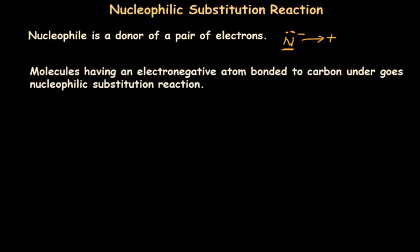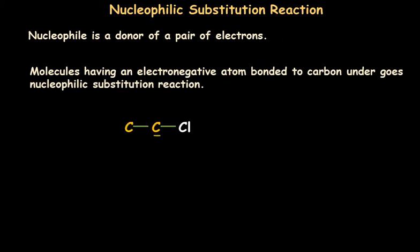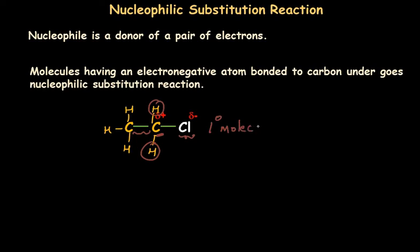What type of molecules undergo nucleophilic substitution reactions? Molecules having an electronegative atom bonded to the carbon undergo nucleophilic substitution reactions. In this molecule, we can see that a carbon is bonded to an electronegative chlorine, and this makes the carbon electropositive. The carbon will also be bonded to the remaining atoms of hydrogen. We can observe that the carbon carrying the electronegative atom chlorine is bonded to just one other carbon, and the other two bonds are occupied by hydrogen. Such a molecule is called a primary molecule — a primary haloalkane.